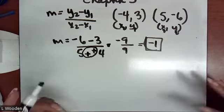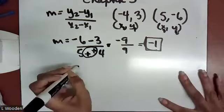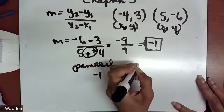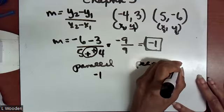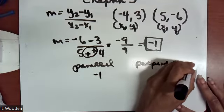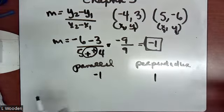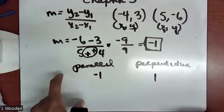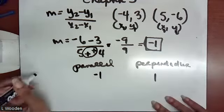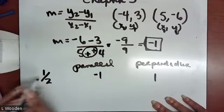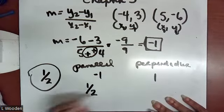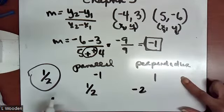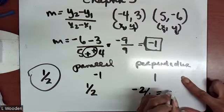Parallel and perpendicular lines: parallel lines have the same slope, so it would be negative 1. Perpendicular lines have opposite reciprocal slopes — the sign changes and the fraction flips. Here, it would just be positive 1. If the slope were one-half, a parallel line has slope one-half; a perpendicular line would be negative 2.